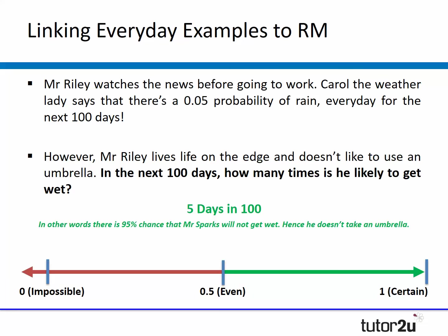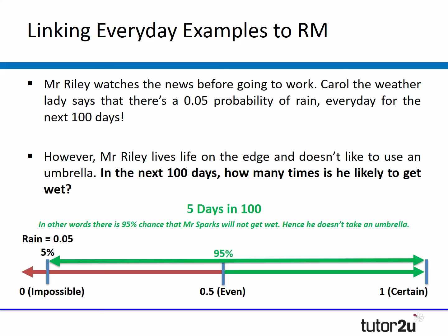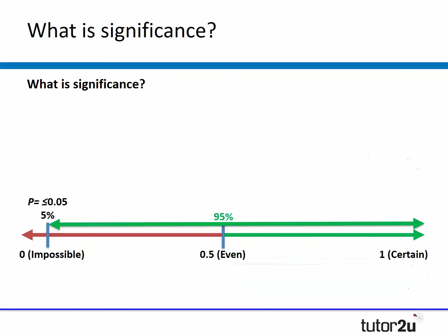If we then turn that around, in other words, there's a 95% chance that Mr. Riley will not get wet — hence the reason he doesn't take an umbrella. Mapped out on the line, there's a 95% chance he'll remain dry and a 5% chance he'll get caught in the rain.